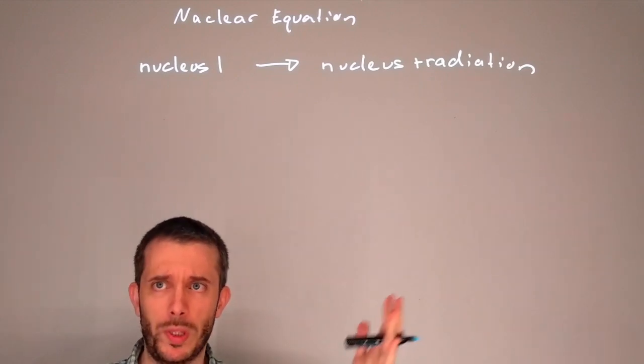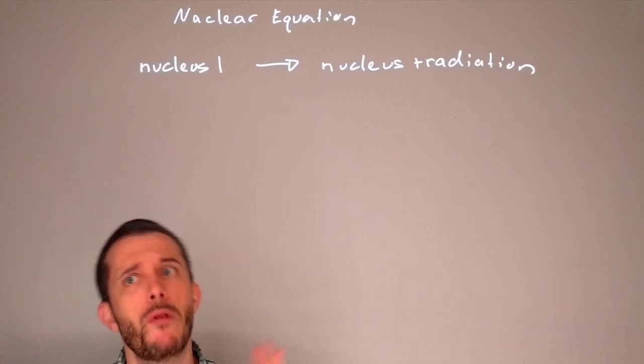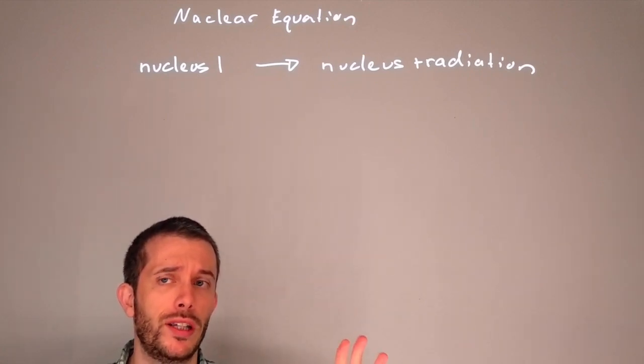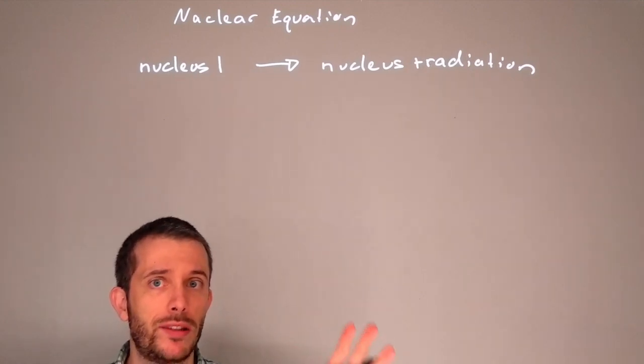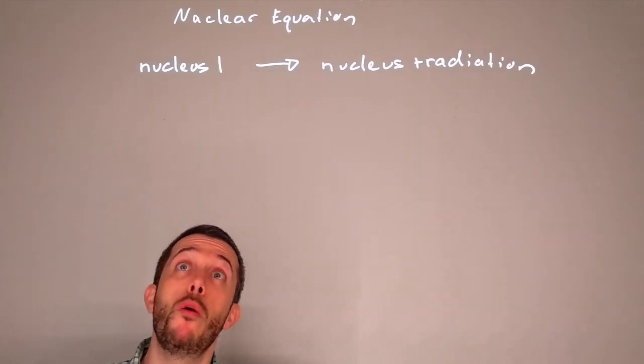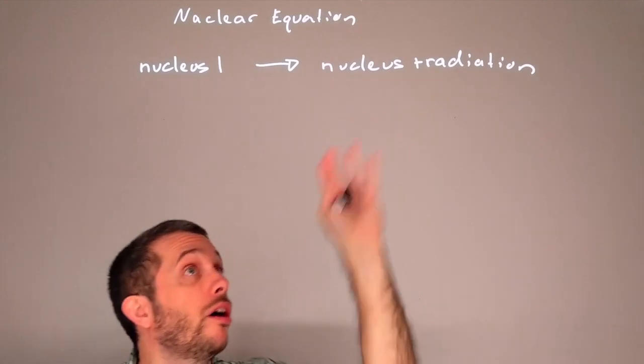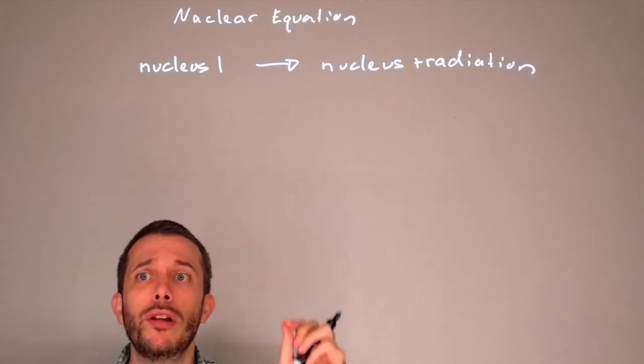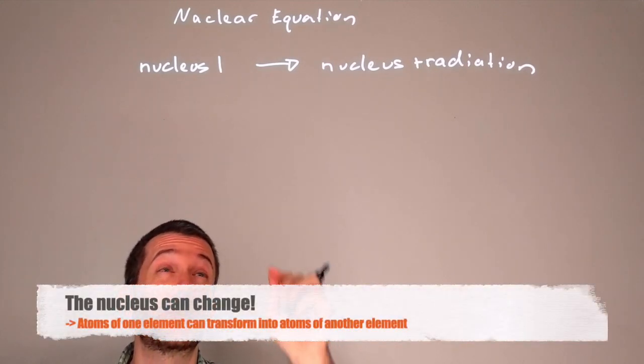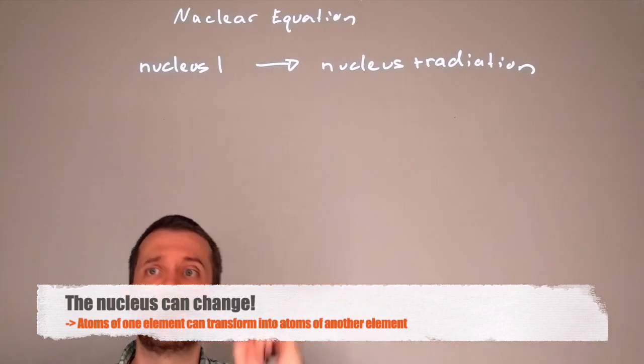So right from the start you should be seeing something amazing or surprising. When we talk about chemical equations, never ever did the elements change. Remember when you did stoichiometry, when you balanced your equations, no matter how much hydrogen you had on the left, that's the amount of hydrogen you got on the right. Now in this nuclear equation, that nucleus can change. So you don't have to have the same elements on the left as you have on the right.